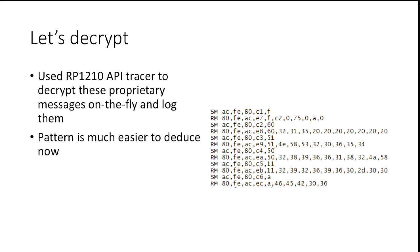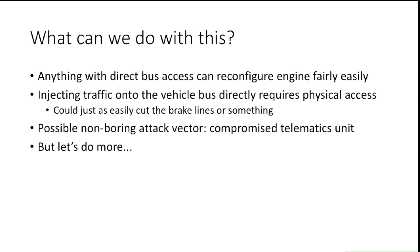After decrypting, I modified the RP1210 API tracer to decrypt everything on the fly. The pattern became a lot more comprehensible — it's a very standard call-and-response protocol where you have a PID, it says 'I want to see that,' and you get back a bunch of ASCII characters. Now that we have this degenerate encryption algorithm and know the PIDs, if we get on the bus we can set parameters in the ECM.